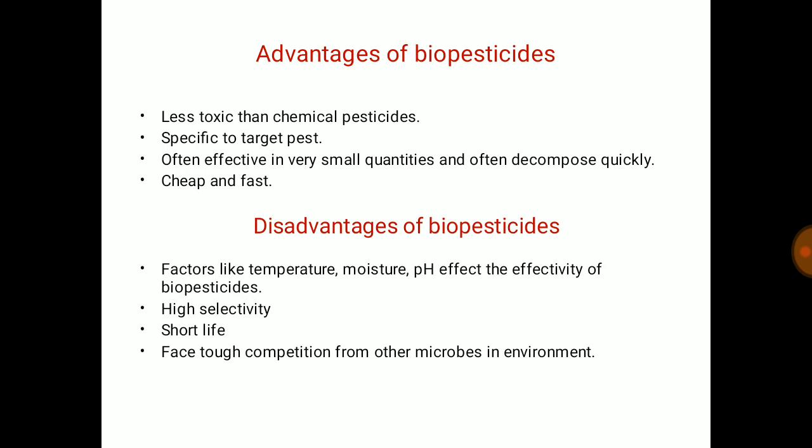Disadvantages of biopesticides: jaisa ki hum jaante hain, biopesticides ke under microorganisms aate hain, plants ke products aate hain. That means, factors like temperature, moisture, and pH affect the effectivity of biopesticides. High selectivity can be one of the disadvantages of biopesticides, and even short life also. Biopesticides face tough competition from other microbes in the environment, kyunki unhe survive karne ke liye, unhe doosre microorganisms se compete karna zaroori hota hai.